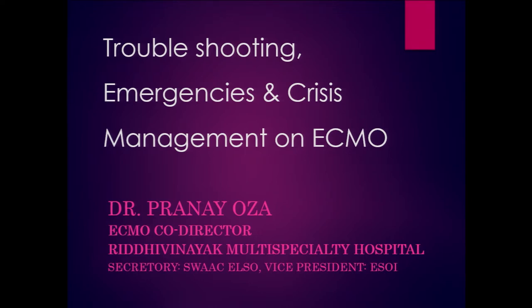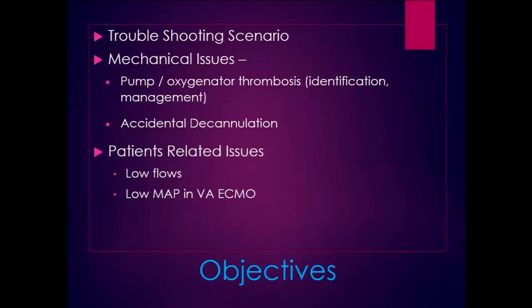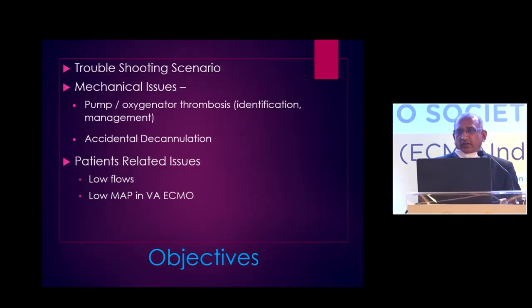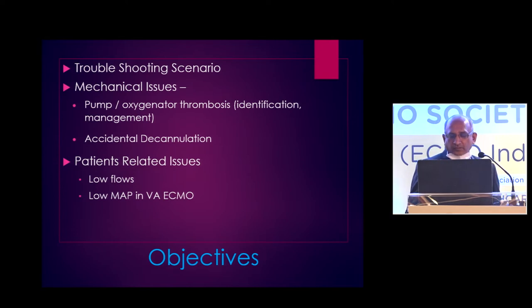I will be talking on troubleshooting. Probably it should have come before weaning. But troubleshooting in ECMO is going to be a huge topic. What I am going to do is take only a few of them, because bleeding and everything is going to come next. So I am going to enlarge on what troubleshooting scenarios can come up. What I will discuss in detail is mechanical issues like pump and oxygenator thrombosis, accidental decannulation, and patient-related issues like low flows and low mean pressures in VA ECMO.